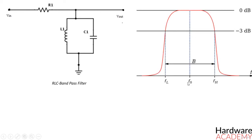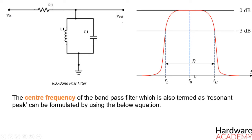The center frequency of a bandpass filter, which is also termed as resonant peak, can be formulated by using the below equation, where L is the inductance of the inductor, and C is the capacitance of the capacitor.